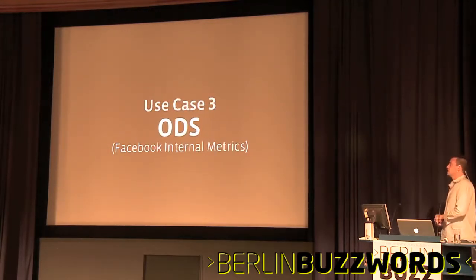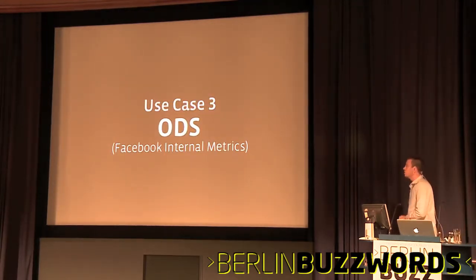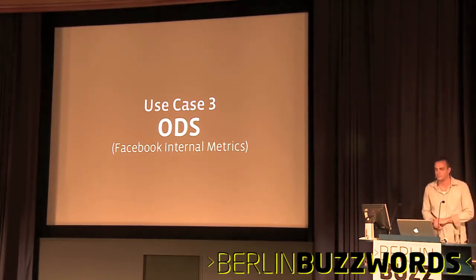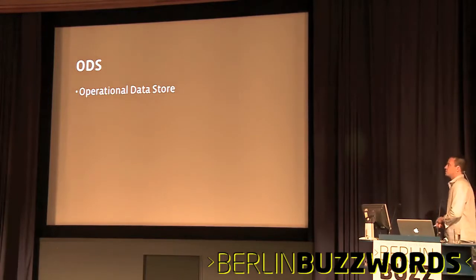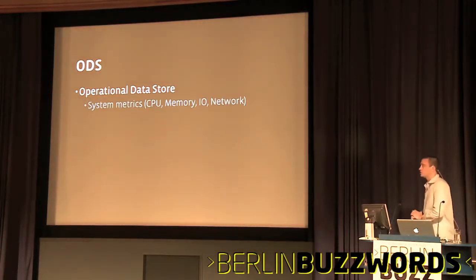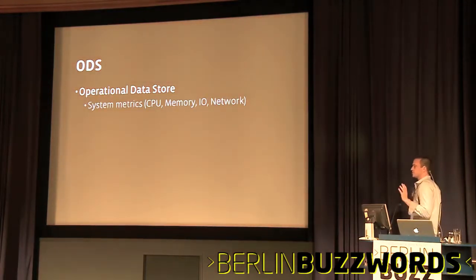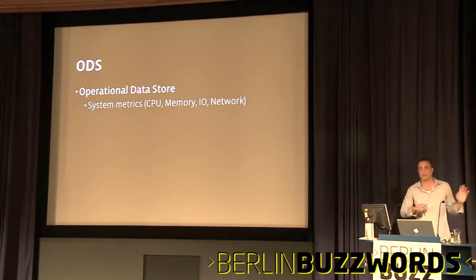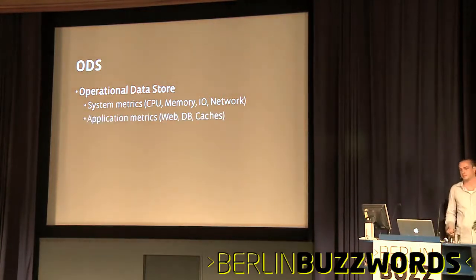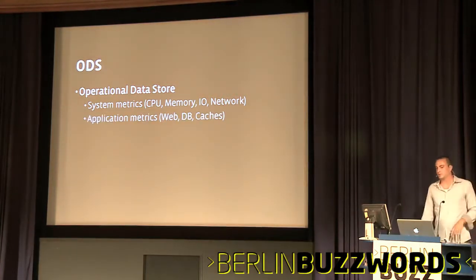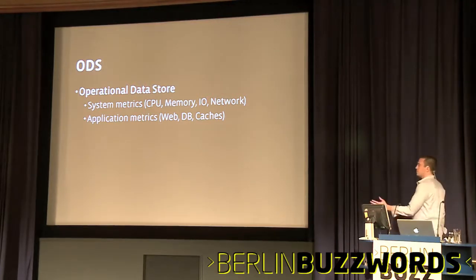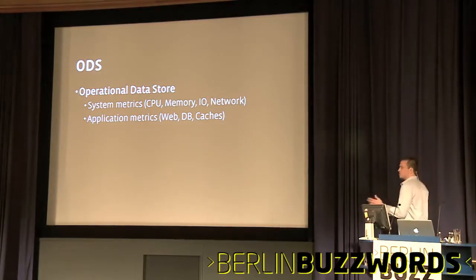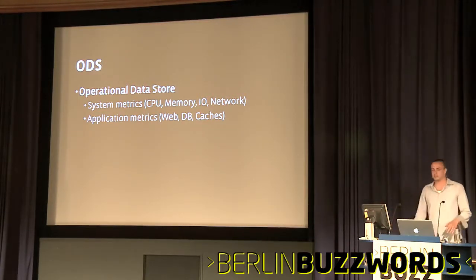Last use case I'm going to talk about: ODS, our internal metrics system. ODS stands for operational data store. We store everything in here — system metrics like CPU, memory, IO, network; application metrics from the web, from the DB tier, from our caches, everything you can imagine.